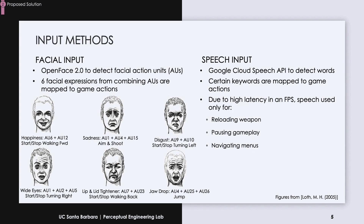Under each face shown, we can see the corresponding mapping. As a secondary input, we added speech recognition using the Windows Speech API. The user's voice command is instantly converted to text, then checked for specific keywords such as 'pause' or 'jump.' However, we noticed a delay with switching in an FPS game, so we used speech only to reload the player's weapon, to pause the game, and to navigate menus.